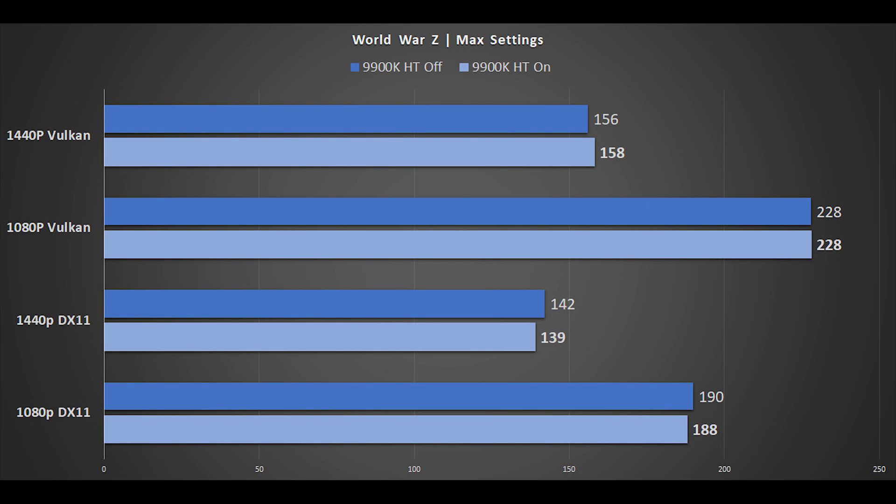Another new game in our test suite is World War Z. All in-game settings are maxed out using the in-game benchmark. Results are included for both 1440p and 1080p since this game isn't super demanding on the GPU, and both DirectX 11 and Vulkan results are shown. Notably, Vulkan absolutely demolishes DirectX 11 performance in this benchmark — something we'll investigate further in our core count and API scaling video. With hyperthreading enabled or disabled, it's almost margin of error. At 1080p DX11, hyperthreading loses by a couple of frames per second, but at 1440p using Vulkan, hyperthreading wins out by a couple of frames per second.